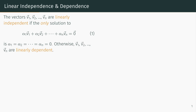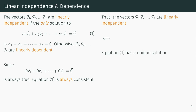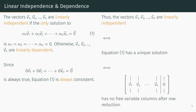Thinking about equation 1 some more, we see that the trivial solution, where all alphas equal 0, is always a solution, and therefore equation 1 is always consistent. Thus, the vectors v1 through vn are linearly independent if and only if equation 1 has a unique solution, which occurs only if the augmented matrix whose columns are v1 through vn has no free variables after row reduction.